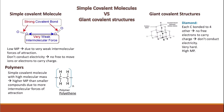Giant covalent structures are a very common exam topic — you may be asked to compare diamond and graphite. Diamond is one of the allotropes of carbon and contains only covalent bonding with no intermolecular forces, as it is a giant structure. Each carbon atom is bonded to four other carbon atoms, so there are no free electrons to conduct electricity. Diamond is very hard and has a very high melting point because of the strong covalent bonds, which require very high energy to break.